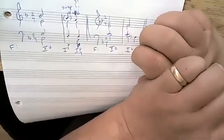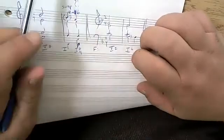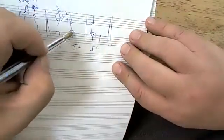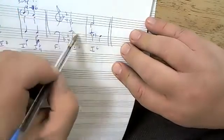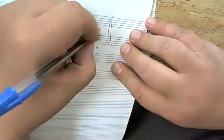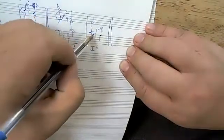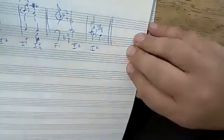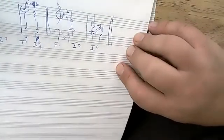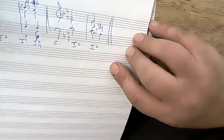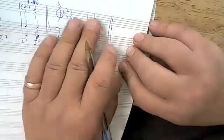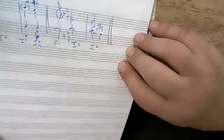Most of the time — about 70-75% — you'll have a simple 4-3, 7-6, or 9-8 suspension. Here's an example of a bass suspension: a five chord in third inversion has B-flat in the bass; it holds over while the one chord arrives and resolves down. Because it's in the bass, we check it against the note just above — that gives a 2-3 suspension. Retardations work the same way but resolve up by step.